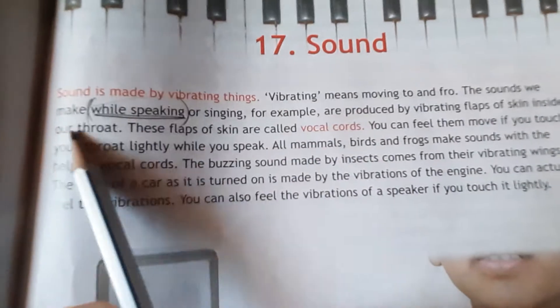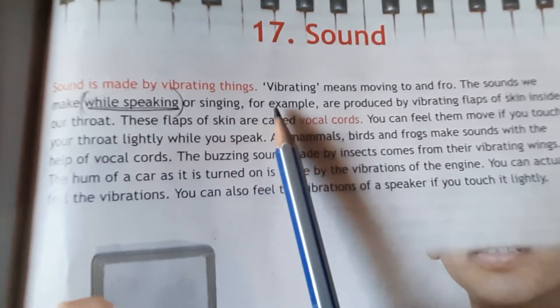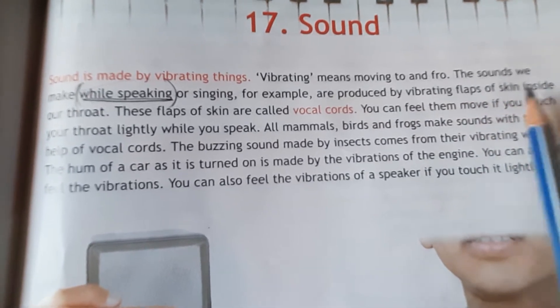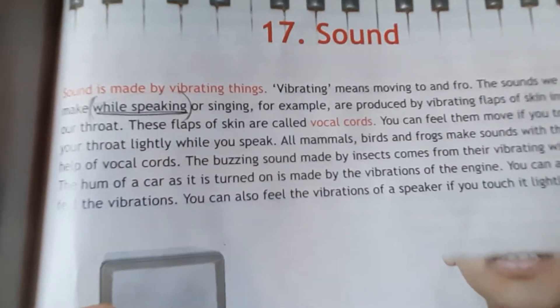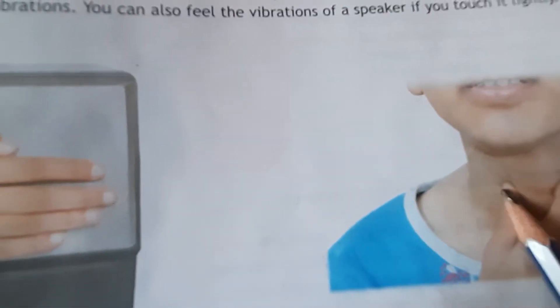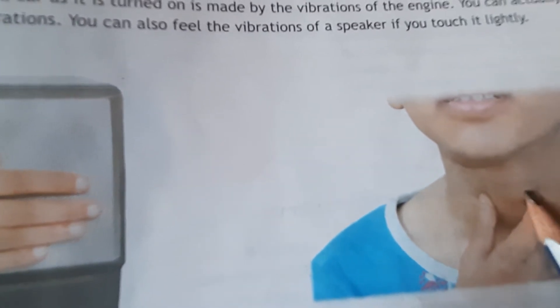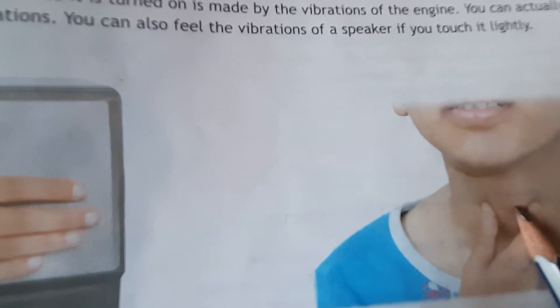The sound we make while speaking or singing, for example, is produced by vibrating flaps of skin inside our throat. If you look at your neck, this is known as the throat. When it is vibrating, then only sound is produced. Now, I am speaking, so how am I producing sound? There is a vibration inside this throat.